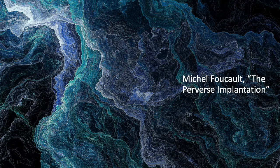Hi everyone. Welcome to the first video mini-lecture experiment of Lit 340. Thank you for taking the time to watch this video. Today we're going to be talking about Michel Foucault's 'The Perverse Implantation,' which is a chapter from his book 'The History of Sexuality Volume 1,' which came out in 1976.